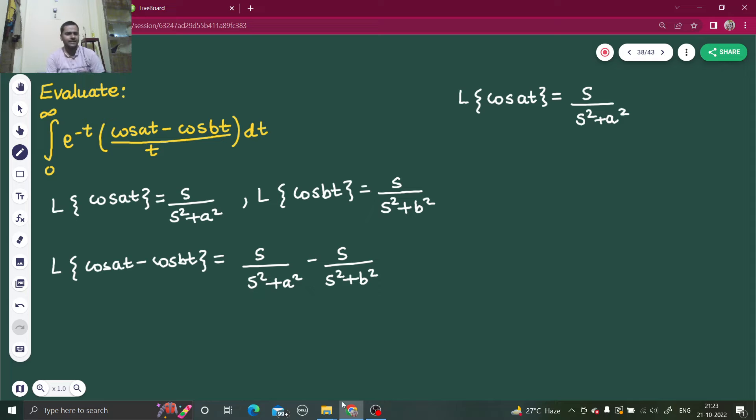Okay now what's next? They are asking us to divide that by t. So division by t property you all know that if Laplace of f of t is equal to f bar s, the Laplace of f of t divided by t that will be equal to integral from s to infinity f bar s ds.